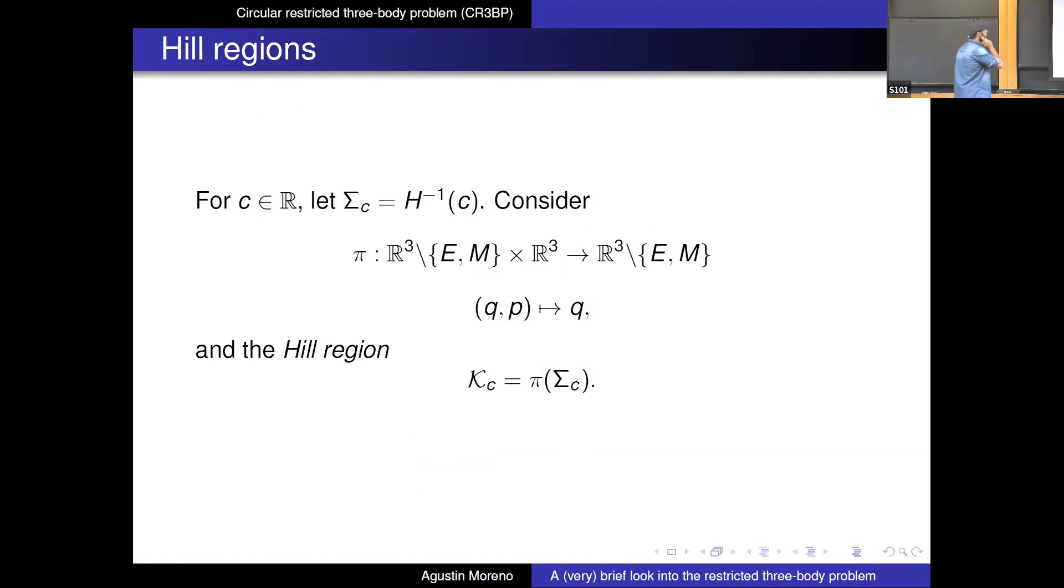So there's also the notion of hill stability due to hill, which consists of the following. So you fix the energy at C and you consider the energy level set sigma C. And then you can also consider the projection to position space. So you map Q and B to Q. The hill region is just by definition, the projection of the energy levels at C to position space.